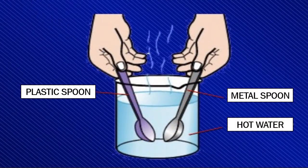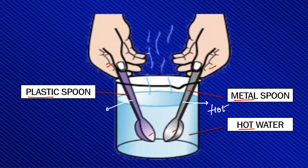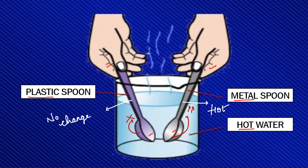Take two spoons — one should be metallic while the other one made up of plastic. Put both the spoons in hot boiling water and hold both of them from their ends. After some time, you will notice that the metallic spoon is getting hotter from the other end also, while there is no such change in temperature in the plastic spoon. This means that the metal spoon allows heat to transfer through it, while the plastic spoon does not allow heat to transfer through it.